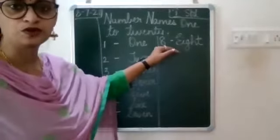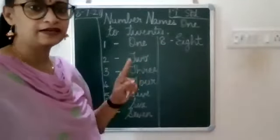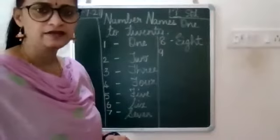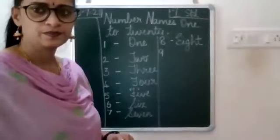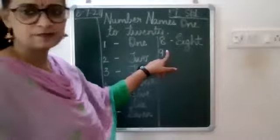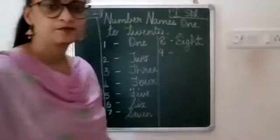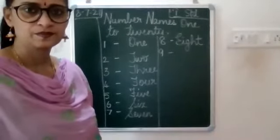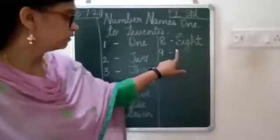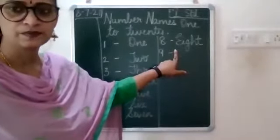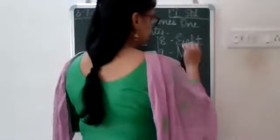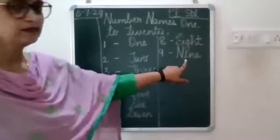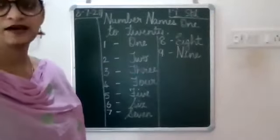Now after you have written EIGHT, leave one line, write NINE. Then leave a finger space, put a small dash, leave a finger space, then again leave one finger space, write capital N-I-N-E, 9.